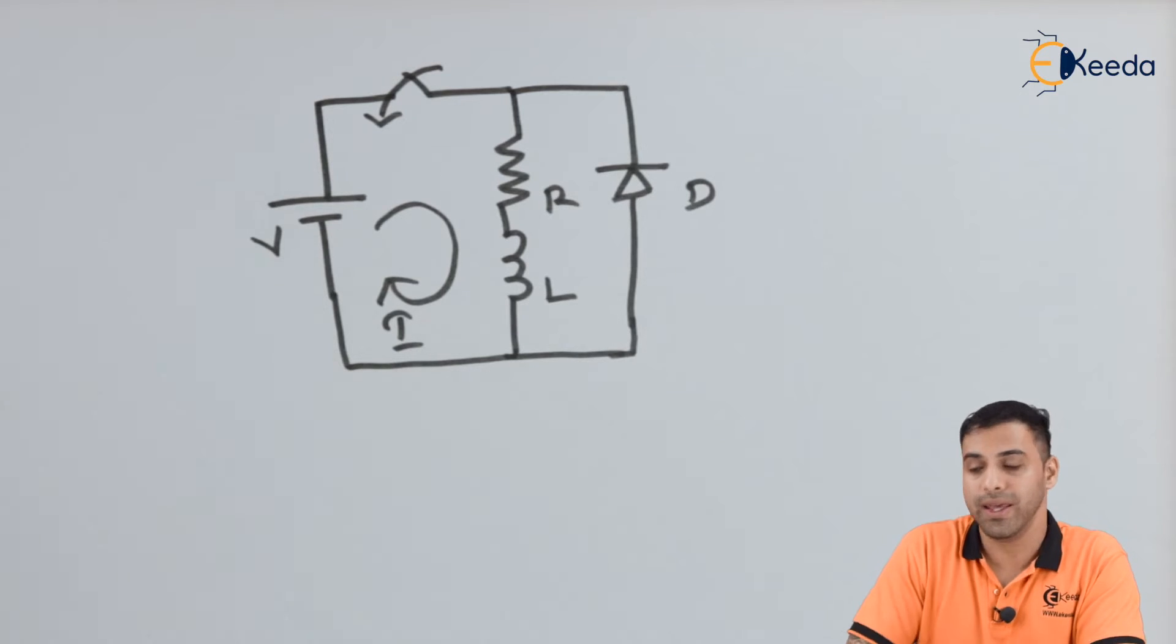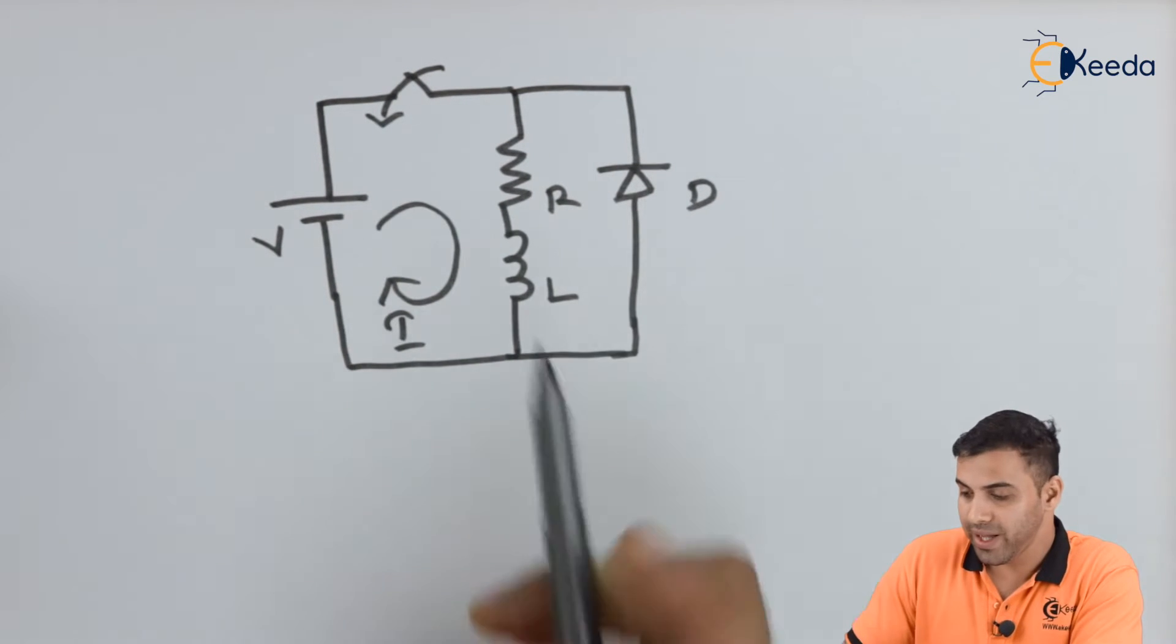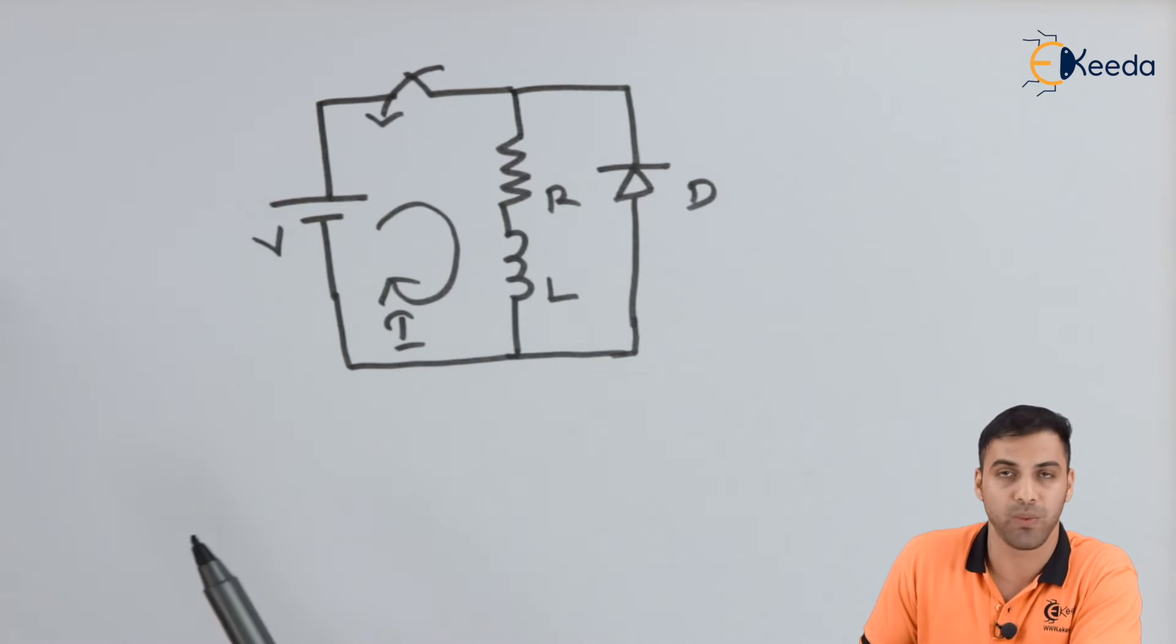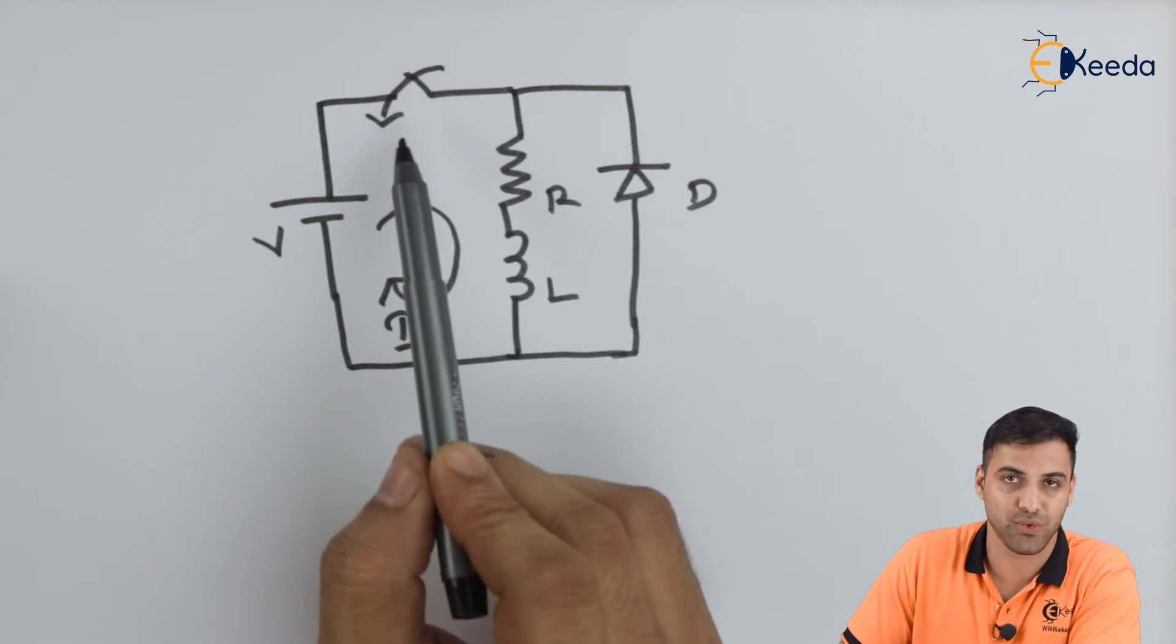Now if there is no diode here, when I close the switch, electric current starts flowing in this loop. Now let's see what happens when I switch off this switch.